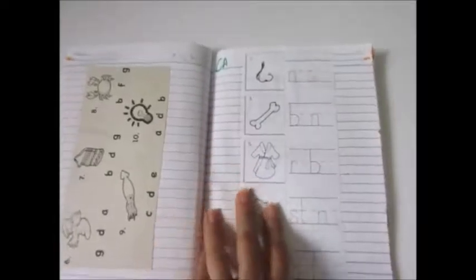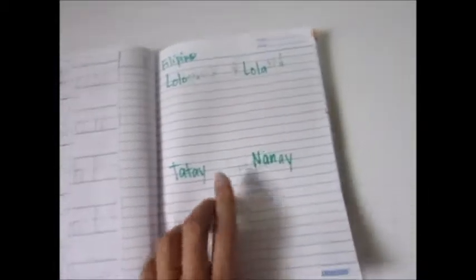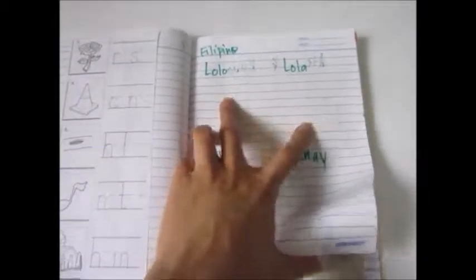Then that one also. Then for this one, CA again, he will just write the missing letters. This one also. And then for Filipino, he will then again sort different members of the family.